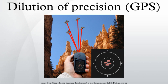The horizontal dilution of precision and the vertical dilution of precision are both dependent on the coordinate system used. To correspond to the local horizon plane and the local vertical, X, Y, and Z should denote positions in either a north, east, down coordinate system or a south, east, up coordinate system.